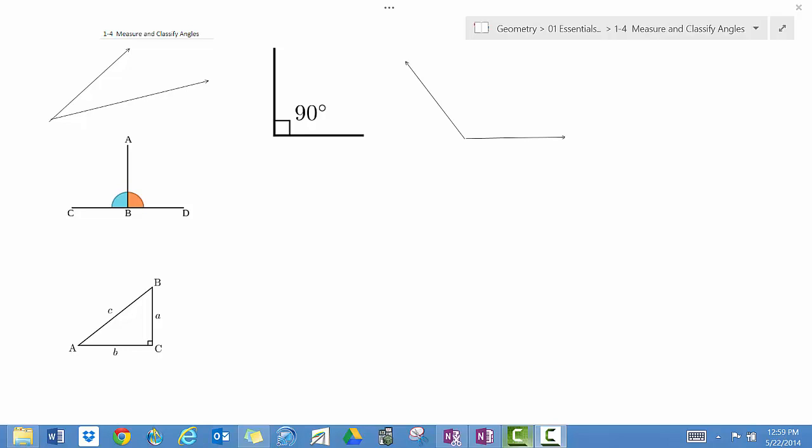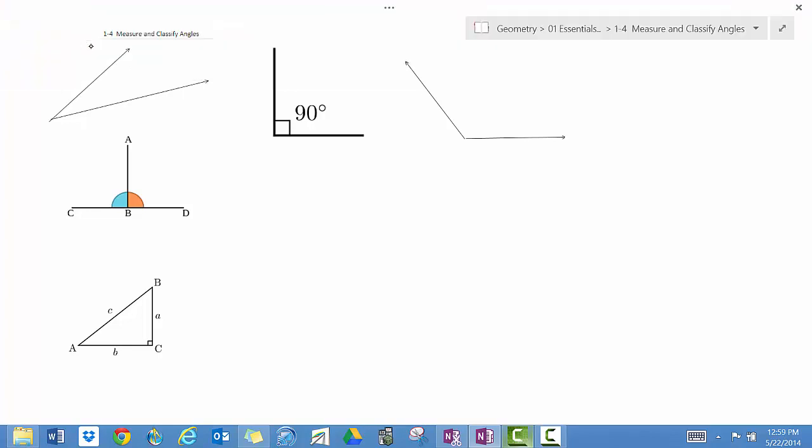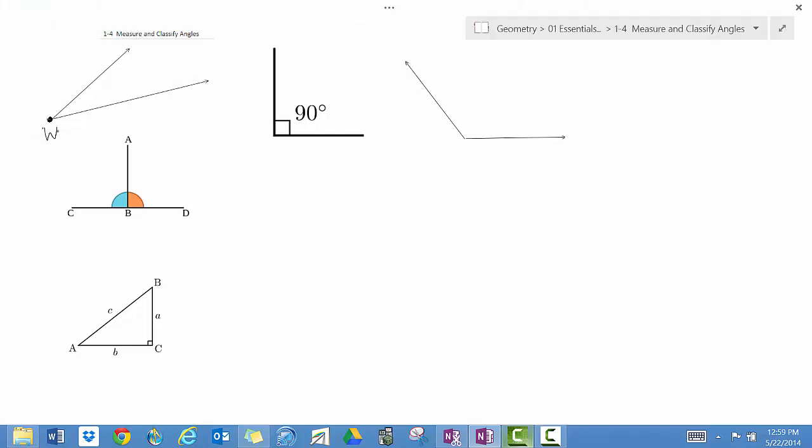An angle consists of two different rays and you can see over here to the left, two rays, they meet at one endpoint and let's call this endpoint W. Okay, let's name our rays.